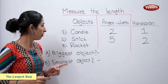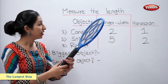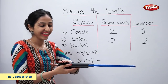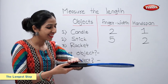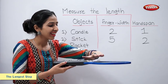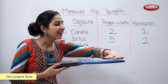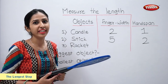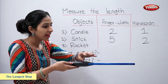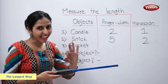Now let us measure the length of the racket. First, finger width. One, two, three, four, five, six, and seven — seven finger width. Now handspans. One, two, and three — three handspans.